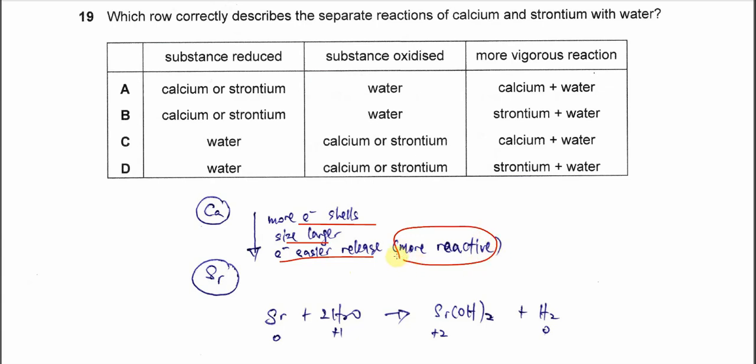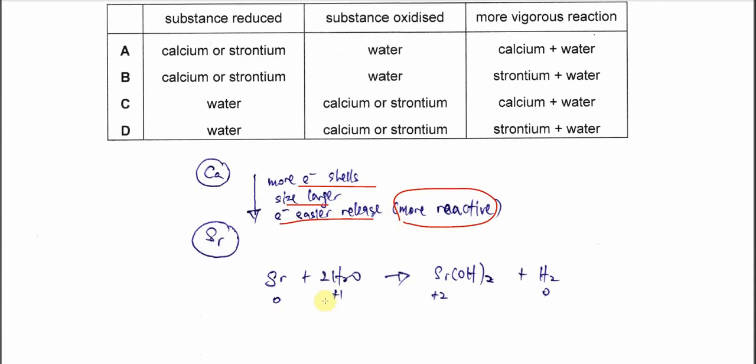And the change in oxidation number - we know that when strontium or calcium reacts with water, the strontium will oxidize to strontium ion and it will go from 0 to positive 2. And the H2O, especially the hydrogen in H2O, its oxidation number will go from positive 1 to 0.